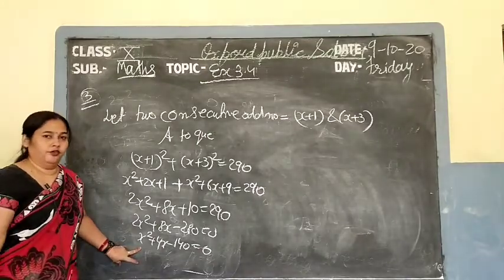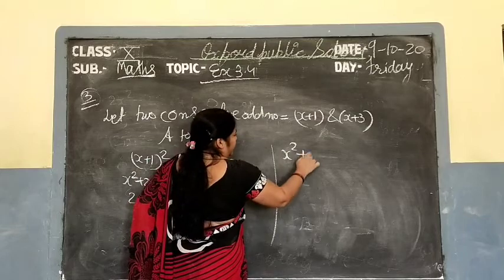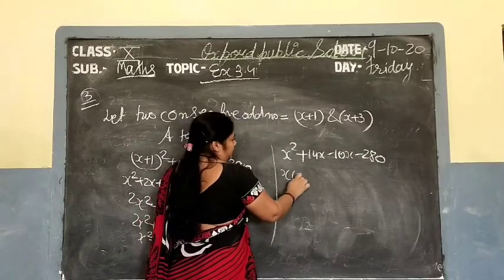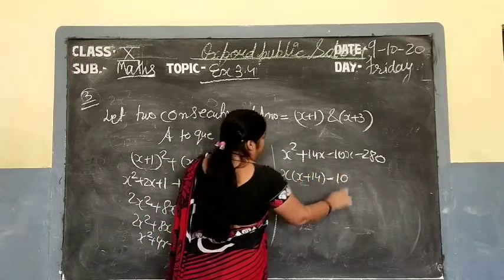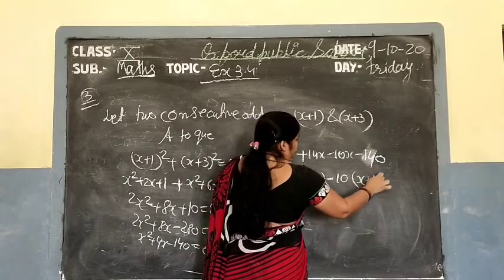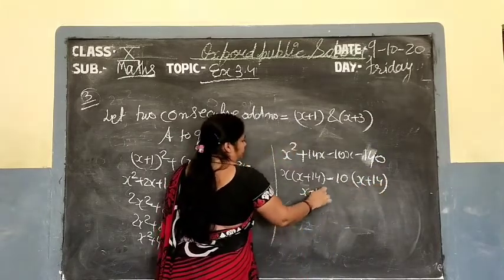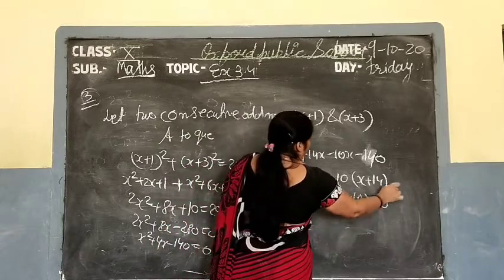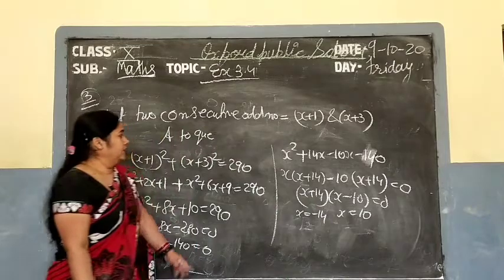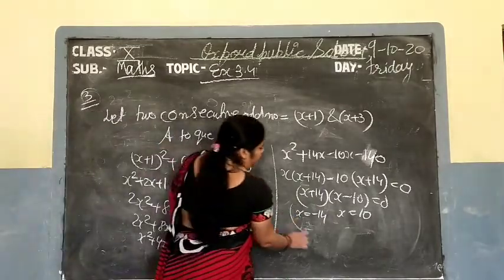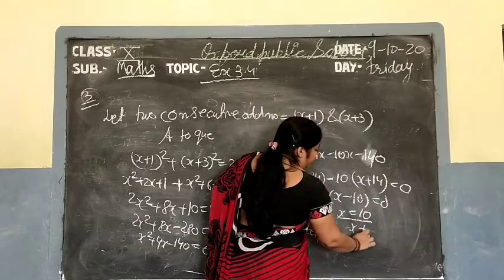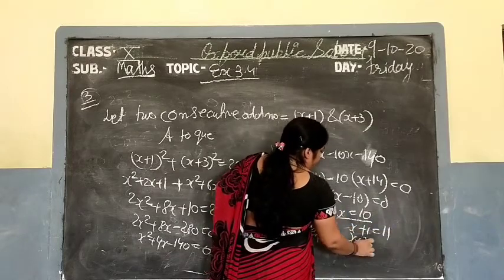Factor 140 to get x square plus 14x minus 10x minus 140 equals 0, since 14 times 10 is 140 and 14 minus 10 is 4. So x times x plus 14 minus 10 times x plus 14 equals 0, giving x plus 14 times x minus 10 equals 0. So x equals minus 14 or x equals 10. Since only positive numbers are given, x equals minus 14 is not valid.